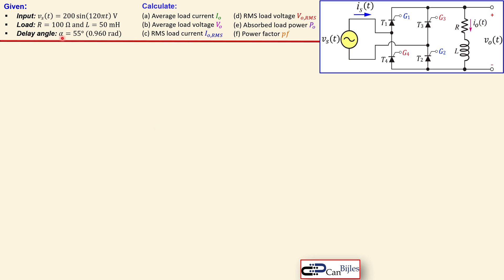The delay angle used for the thyristors is 55 degrees. Gate 1 and Gate 2 are active during the positive cycle of the input signal, and Gate 3 and Gate 4 for thyristors T3 and T4 are activated during the negative cycle. We will calculate parameters like the average load current and average load voltage.